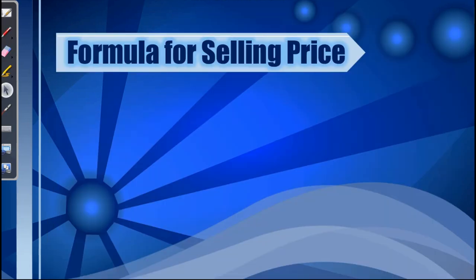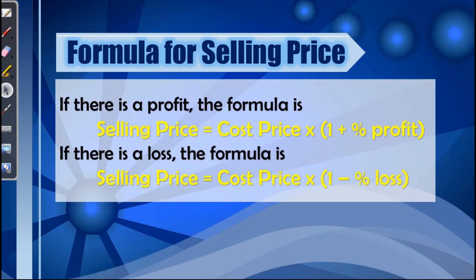If you are looking for the selling price, the formulas are as follows. If there is a profit, the formula is: selling price = cost price × (1 + percent profit). And if there is a loss, the formula is: selling price = cost price × (1 − percent loss).